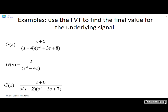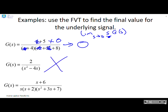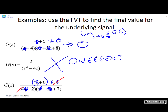Some practice examples: use the final value theorem — the limit as s goes to zero of s·G(s) — to find the final value. For the first one, by inspection, setting all s's to zero and multiplying by s gives zero over 32, so the answer is zero. The second one is divergent, so don't even try. For the third, multiply by s, cancel the matching s terms on numerator and denominator, set remaining s's to zero, and you get 6 over 40.